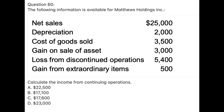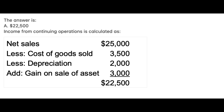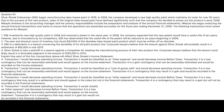Question 60. The following information is available for Matthews Holdings Inc. Calculate the income from continuing operations. A. $22,500; B. $17,100; C. $17,600; D. $23,000. The answer is A: $22,500. Income from continuing operations is calculated as follows.